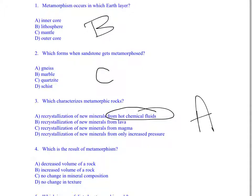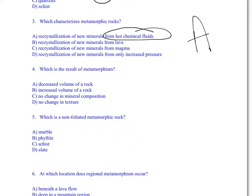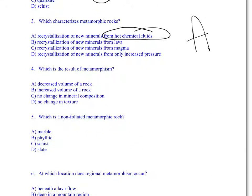Which is the result of metamorphism? Do you get a smaller volume, a larger volume, no change in mineral composition, and no change in texture? Well, we do get a change in texture and we do get a change in mineral composition, and we do get a change in volume. But the answer is going to be A, decreased volume.